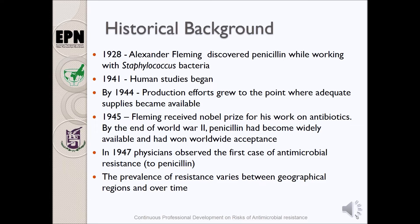In 1928, Alexander Fleming discovered penicillin while working with Staphylococcus bacteria. He noticed that a type of mold growing by accident on a laboratory plate was protected from and even repelled the bacteria. This active substance, which Fleming called penicillin, was literally an antibiotic. In 1941, human studies on penicillin began, and the production efforts grew to the point where adequate supplies became available by 1944.